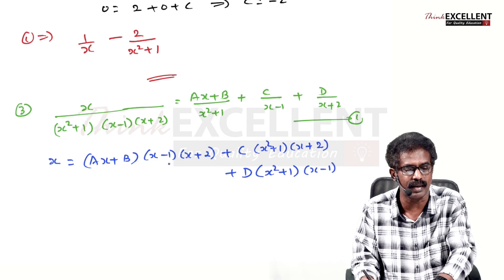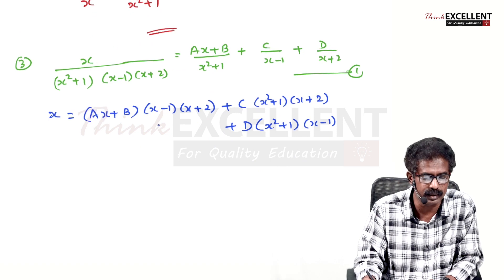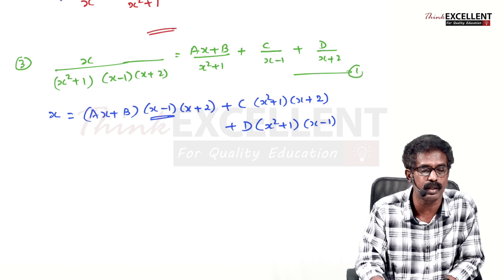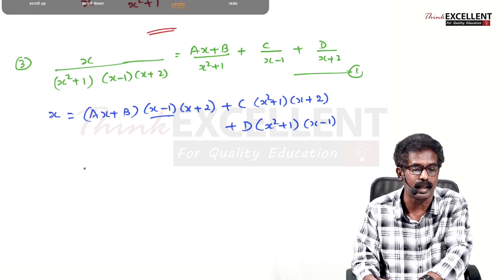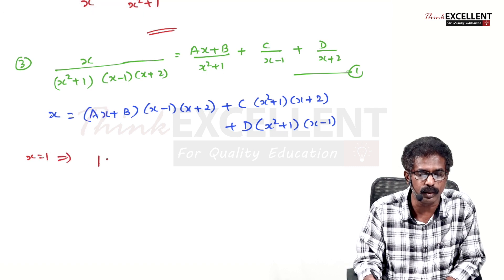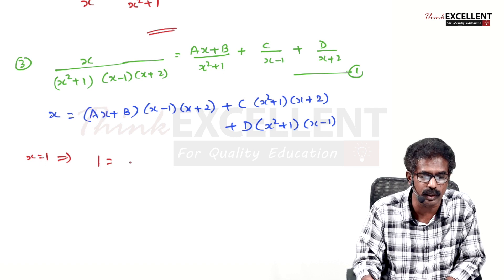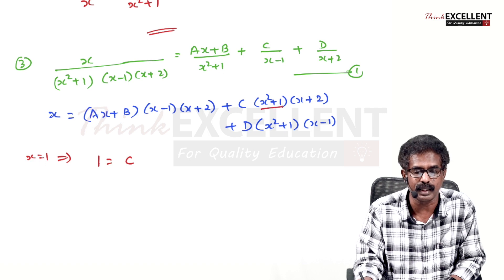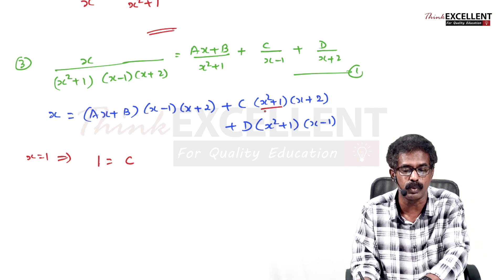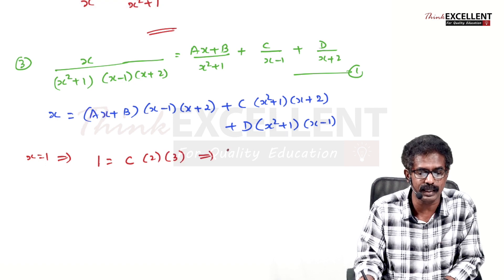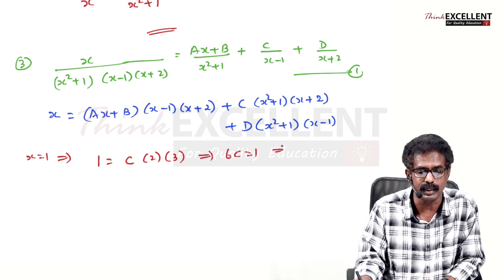There are two linear factors. Make (x-1) = 0 by putting x = 1. Left side: 1. Right side: first term is 0, last term is 0. Only the C term remains: C(1²+1)(1+2) = C(2)(3) = 6C. So 1 = 6C, giving C = 1/6.